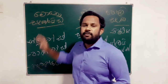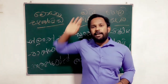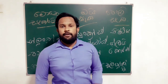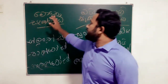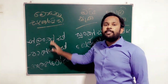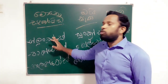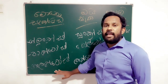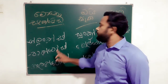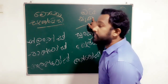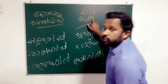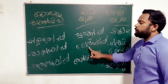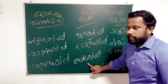To summarize: the monosaccharides are glucose, fructose, and galactose. The disaccharides are sucrose, maltose, and lactose.